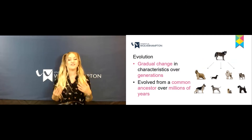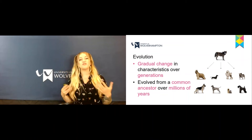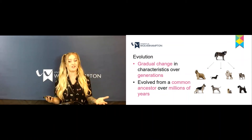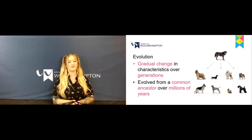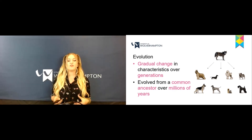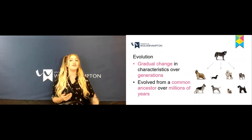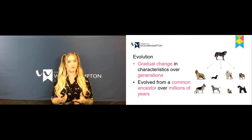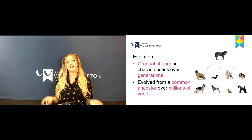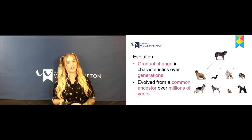So moving on now to evolution. Adaptations over a gradual time result in the evolution of the species — a gradual change of characteristics over many many generations is known as evolution. Animals evolved from a common ancestor over millions of years ago, so evolution is not a thing that happens with a few generations, it is a long period of time. Just like the polar bears — if they had to evolve small ears it would have been throughout many many generations, not overnight.